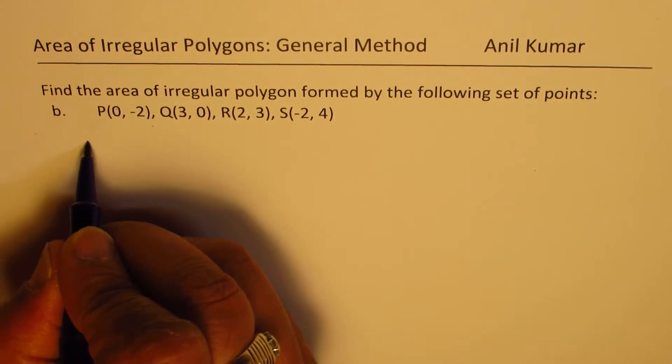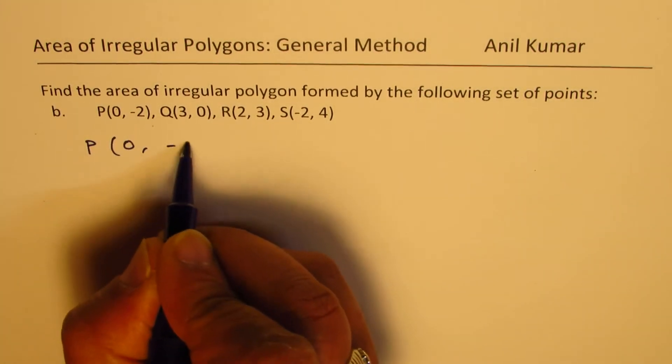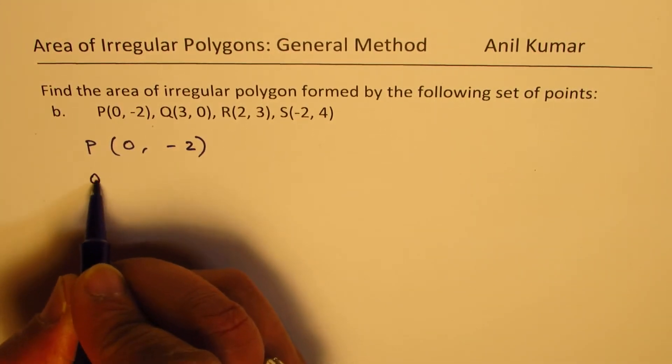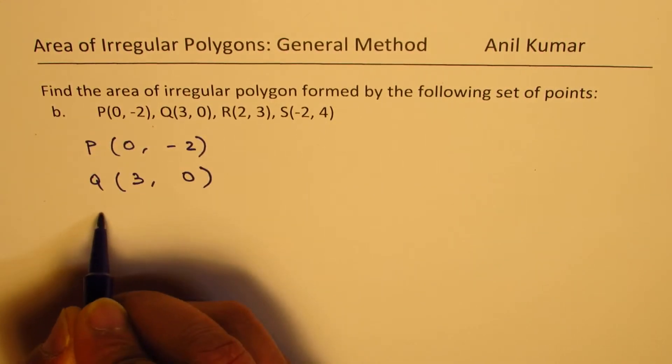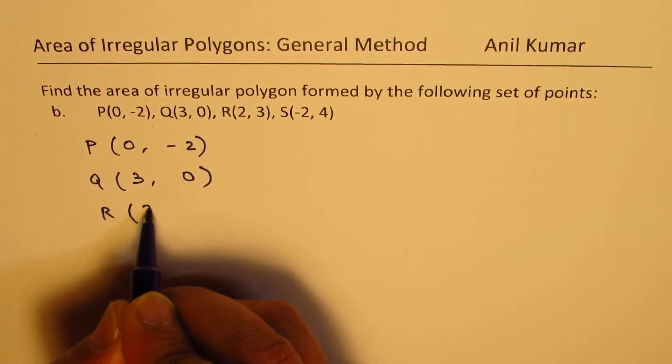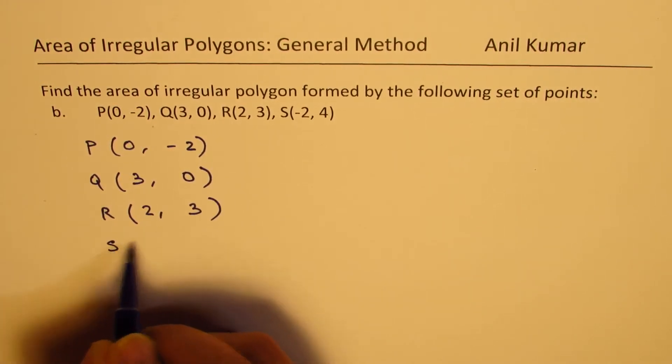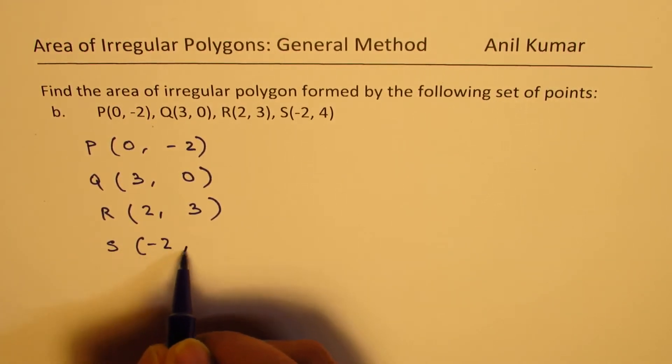Let me rewrite these points where P is 0 minus 2, Q is 3, 0. I have taken simple points for easy calculation. The idea is to understand the method. And S is minus 2, 4.